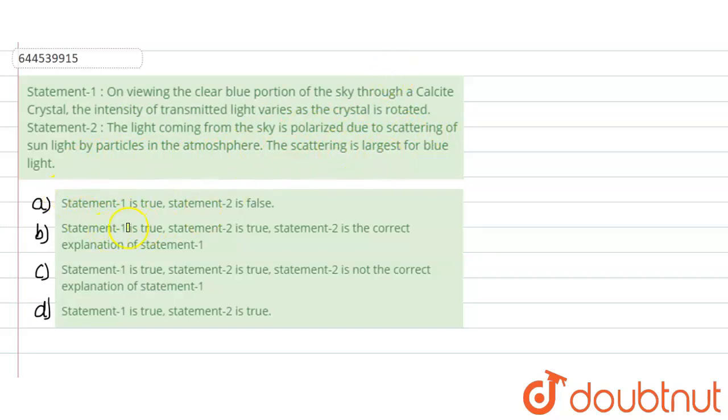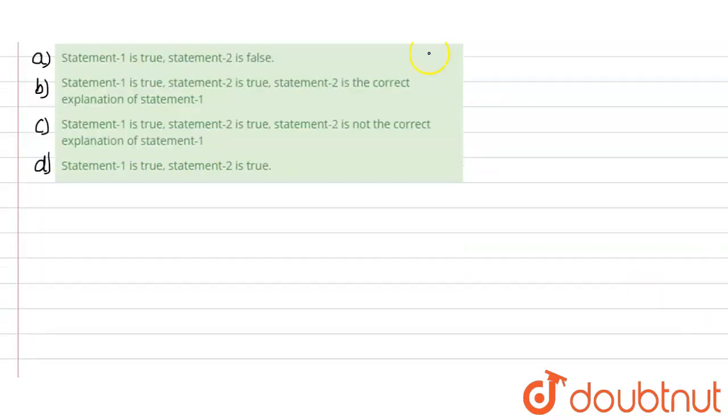Now there are statements which have been given, so we need to check. First of all, we will be checking what is basically polarized and unpolarized light.